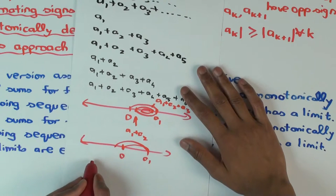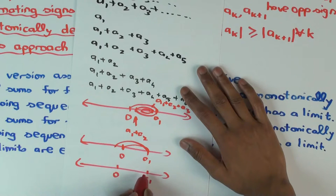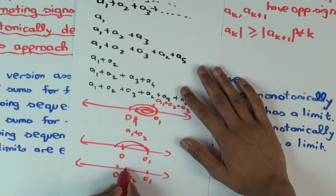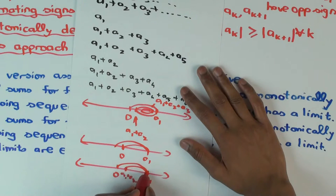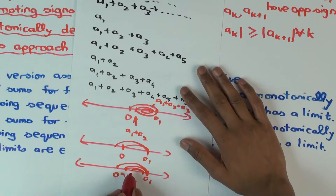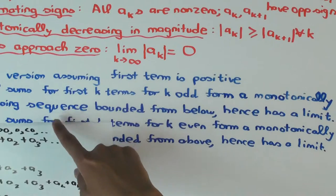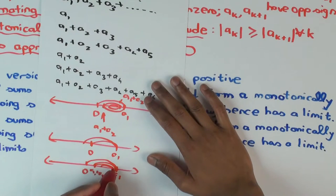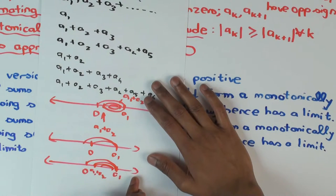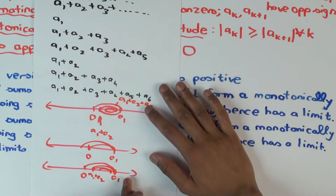If I'm looking at the odd-indexed terms: I get to a_1, then I do a_1 plus a_2, then a_1 plus a_2 plus a_3 — now I'm going back, but I cannot overshoot a_1. Each time I have to stay within — less than or equal to — the previous one. So the odd-degree partial sums will be monotonically decreasing, because each time I go down and then up, I cannot go back all the way, or definitely cannot overshoot. Maybe I go back all the way if there's equality, but I definitely cannot overshoot. So therefore, it's monotonically decreasing.